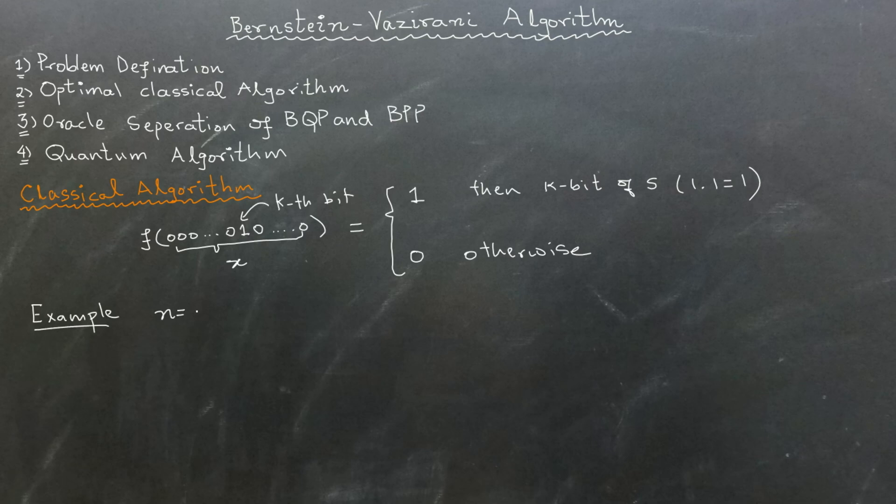Assume that our n is equal to 3 and our secret s that we have to find is 101. Here we first send the oracle f of 001, where only the first bit is 1 while the rest of the bits are 0. It gives us 0 AND 1 plus 0 AND 0 plus 1 AND 1 equals 1. So now we know that the first bit of s must also be 1.